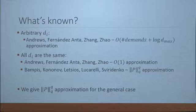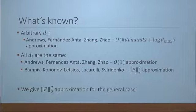This problem was introduced by Andrews, Fernandez Anta, Jean, and Zhao, who gave an approximation algorithm with ratio linear in the number of demands and logarithmic in the maximum demand d_max. For the special case where all demands are the same, the same authors gave a constant factor approximation. Bampis, Kononov, Letsios, Lucarelli, and Sviridenko gave P^q approximation for that special case, where P is a Poisson variable with parameter one — i.e., the q-th moment of the Poisson random variable with parameter one.